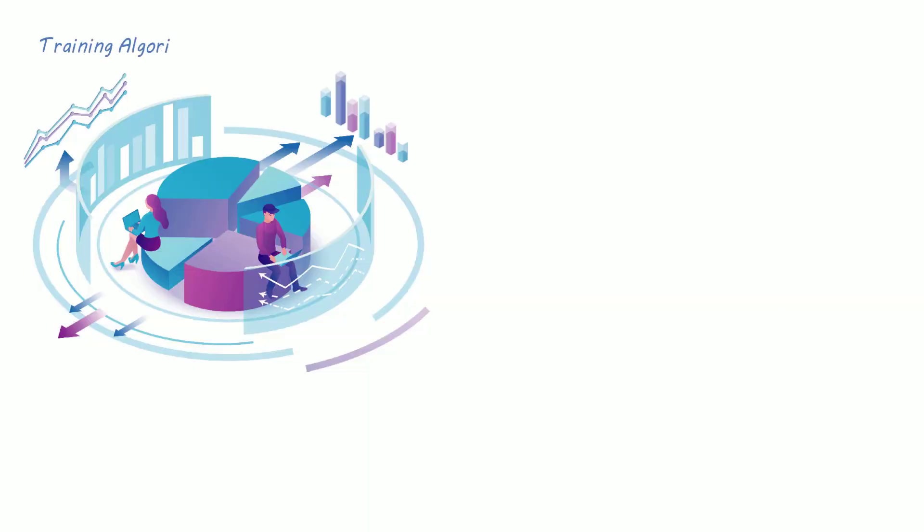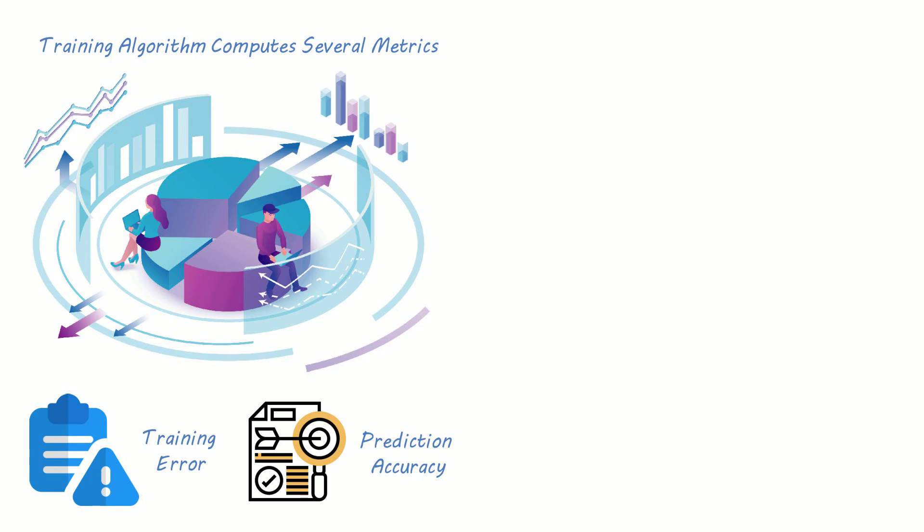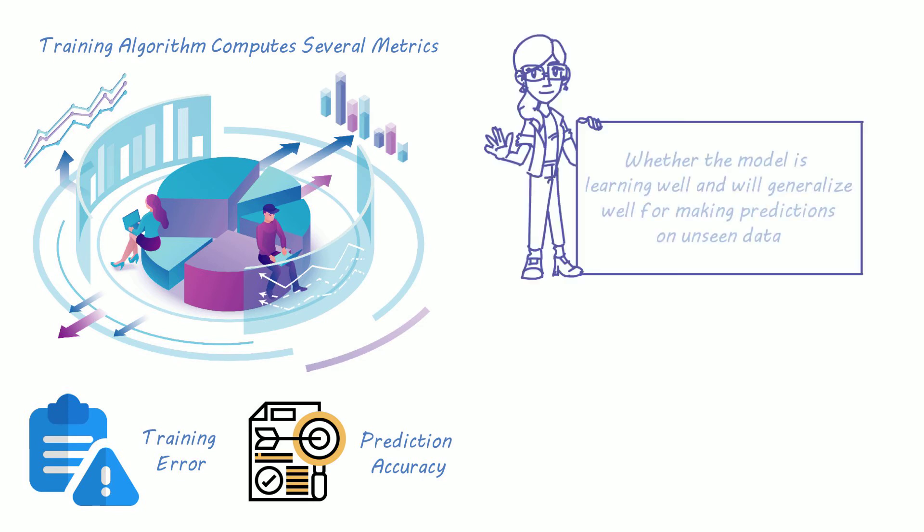Typically a training algorithm computes several metrics such as training error and prediction accuracy. These metrics help determine whether the model is learning well and will generalize well for making predictions on unseen data.